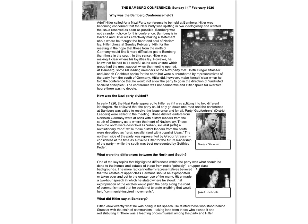Adolf Hitler called for a Nazi party conference to be held at Bamberg. He was becoming concerned that the party was splitting in two ideologically and wanted the issue resolved as soon as possible. Bamberg was not a random choice for this conference. Bamberg is in Bavaria, and Hitler was effectively making a statement about where he thought the heart and soul of Nazism lay. Hitler chose a Sunday, February 14th, for the meeting in the hope that those from the north of Germany would find it more difficult to get to Bamberg than those in the south.